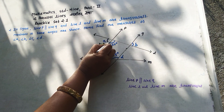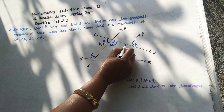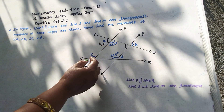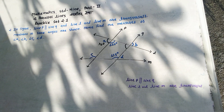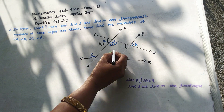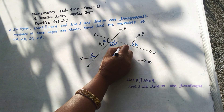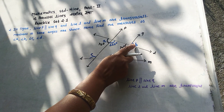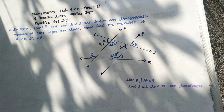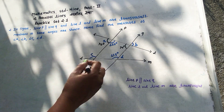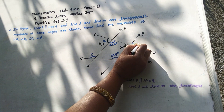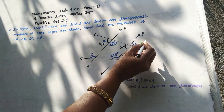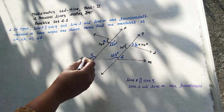Now, these angles are corresponding angles, and corresponding angles are congruent or equal. Therefore, this angle is 70 degrees. These two angles are opposite angles, and opposite angles are equal or congruent. Therefore, angle B equals 70 degrees.